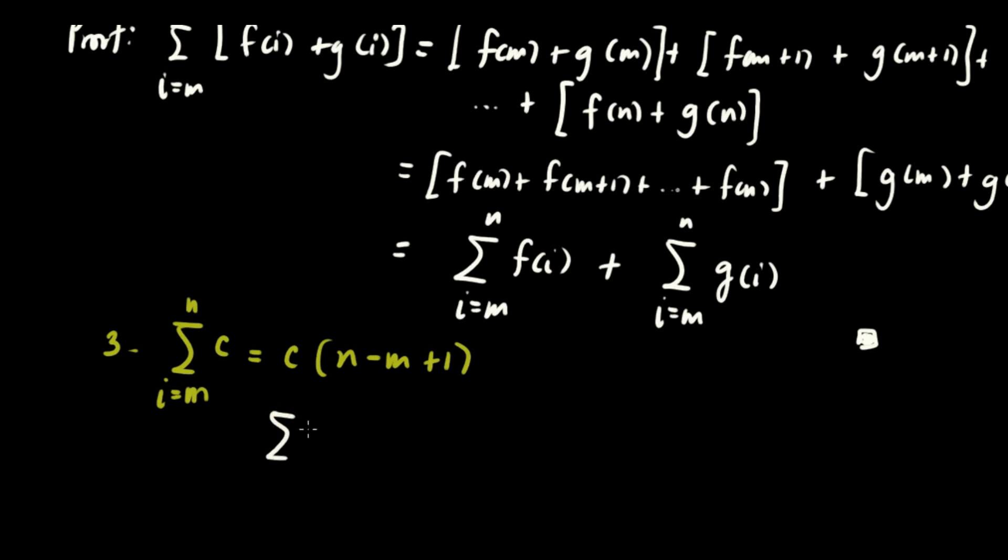For instance, summation of 3 from i equals 2 hanggang 5. So this is equivalent to, pag sinopsis mo yung 2, so 3 pa din. Pag nag-3 ka, 3 pa din. Pag nag-4 ka, 3 pa din. Pag nag-5 ka, 3 pa din. So this is equivalent to 3 times 4. And 4 can be obtained by subtracting 2 from 5 and then adding 1. So this is equivalent to 3 times 5 minus 2. So that's the upper bound minus the lower bound of 2 plus 1. So there you go.